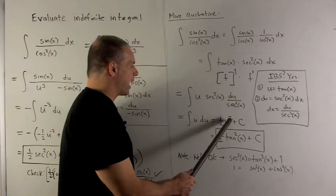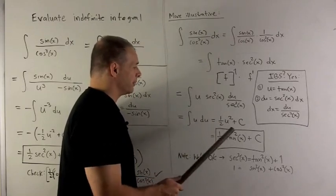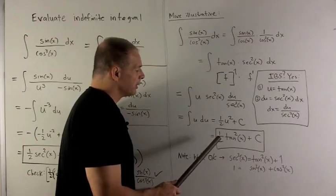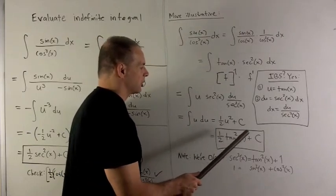This is u to the 1, so I add one gives me a square. Flip it over, gives me a half in front, and then I add my constant. Putting back in for the tangent, gives me one half tangent squared x plus c.